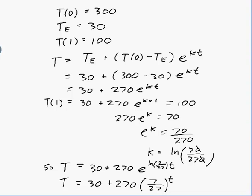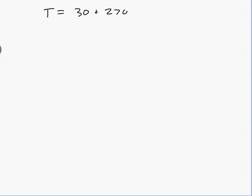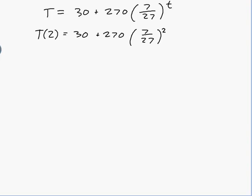So that's the formula. Now I need to find the temperature after 2 hours. T(2) = 30 plus 270 times (7/27) squared. When I plug that into my calculator I get approximately 48, so the pot is 48 degrees Celsius after 2 hours.